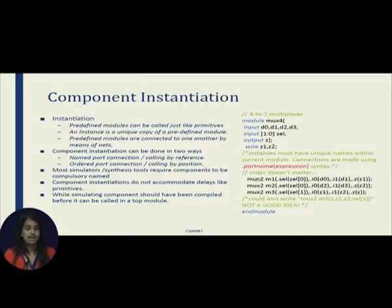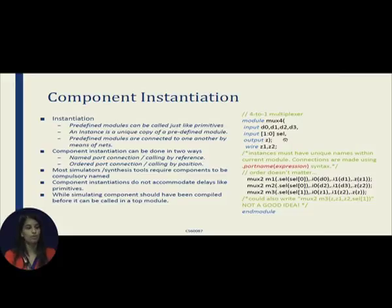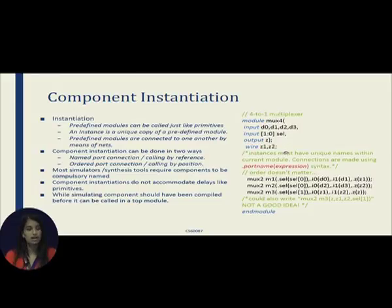Component instantiation does not include delay, but it should include a component name. I have three muxes named m1, m2, and m3. Before we do a simulation of this whole module, if you want to test the 4-to-1 mux to see if it is operating properly, you first have to synthesize each individual module and then use them. This is how general component instantiation works; there may be more parameters and things that can be added — this is just the basic form.